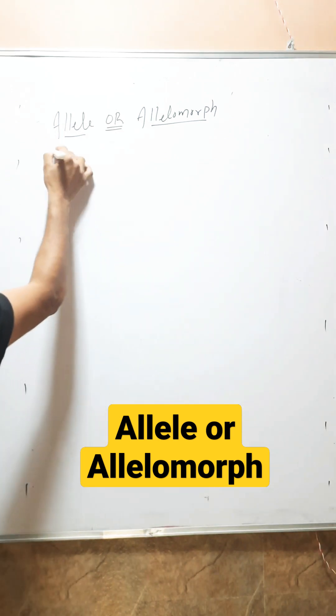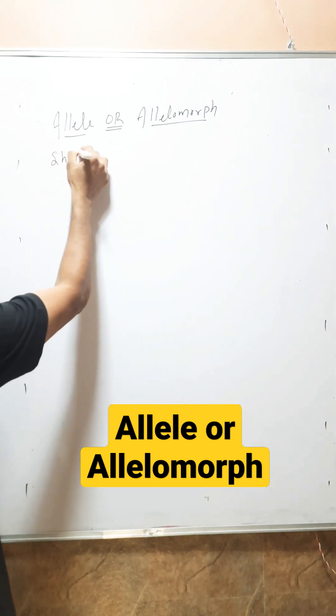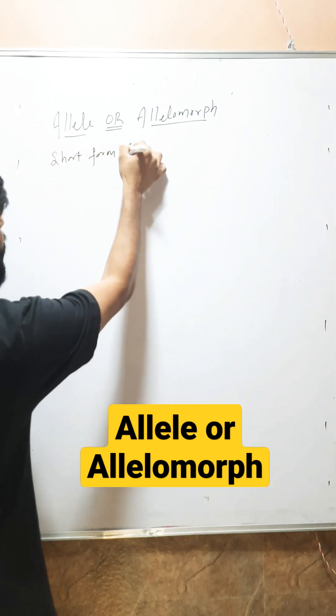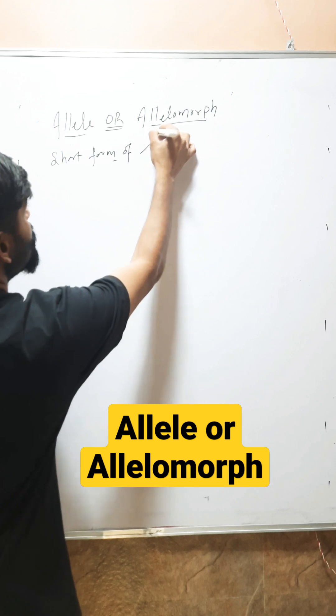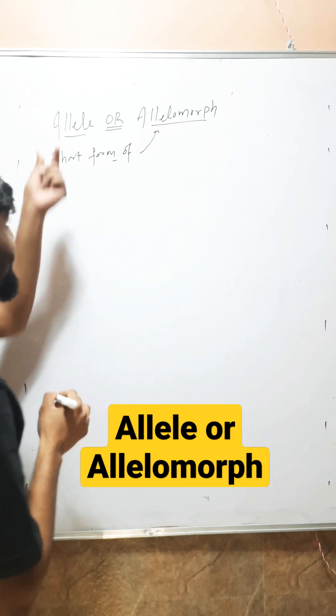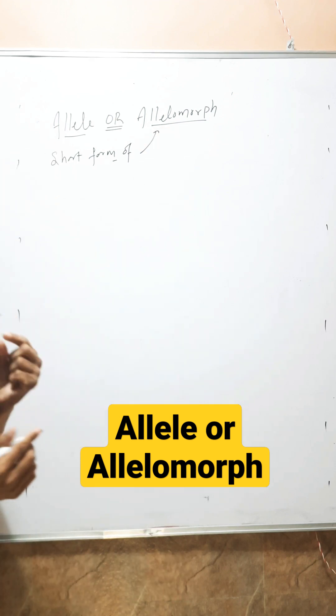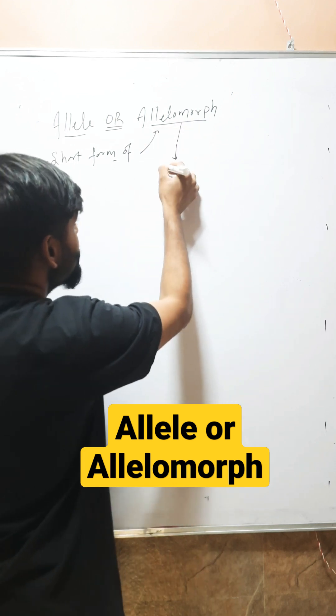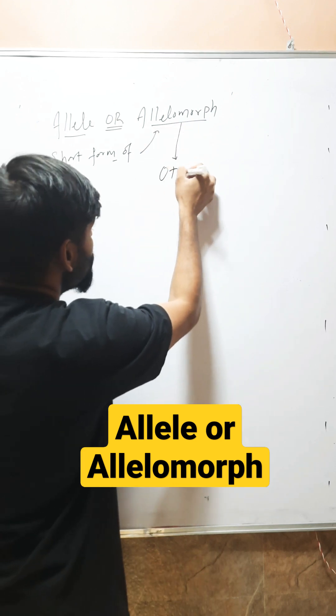Allele is a short form of allelomorph. Allelomorph means other form.